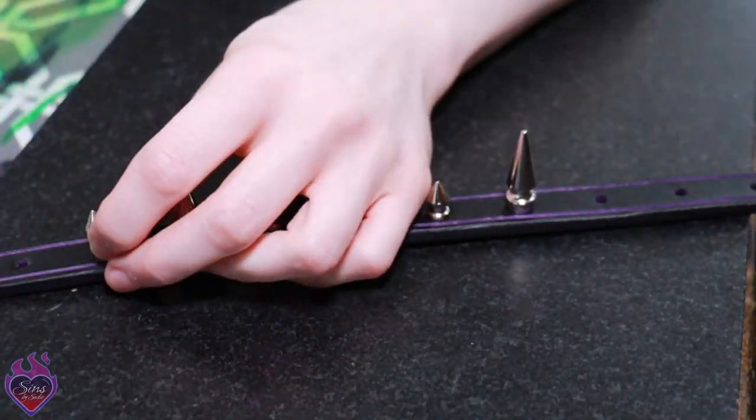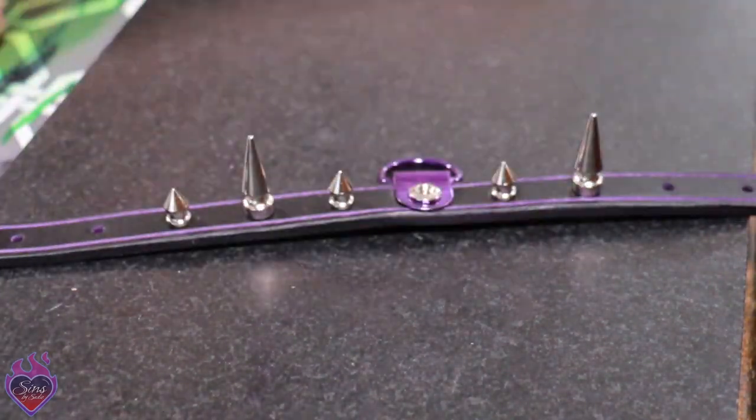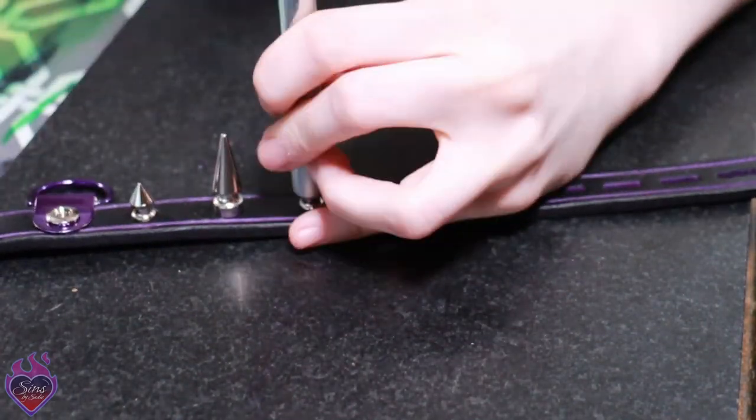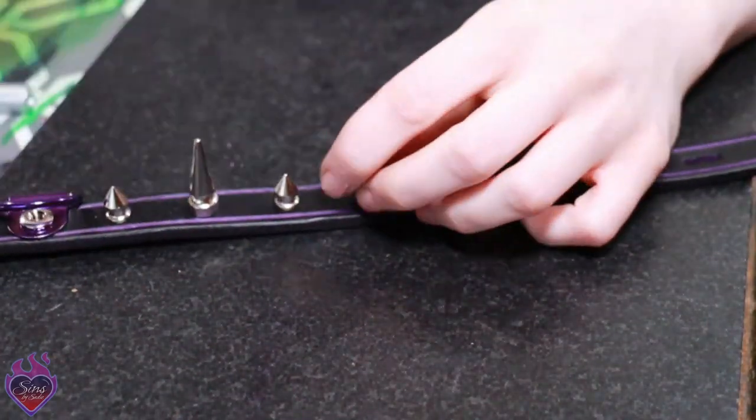When it's properly set, it should not be able to wiggle or twist. Now repeat this process until all of the spikes are set. Easy, right?